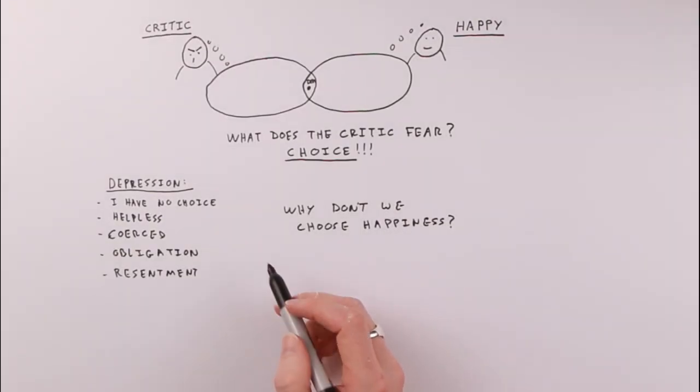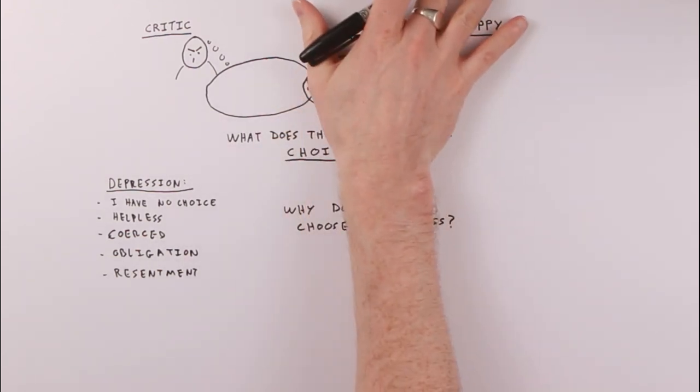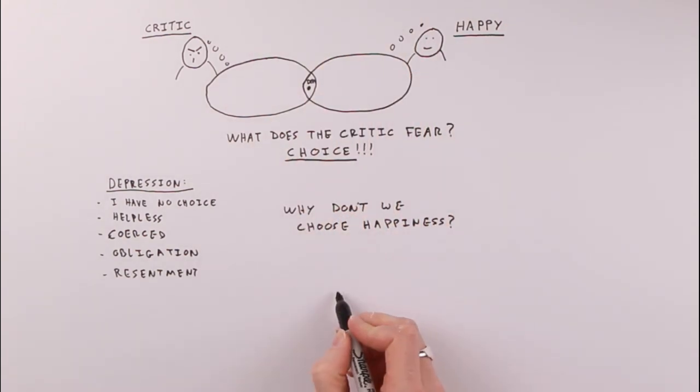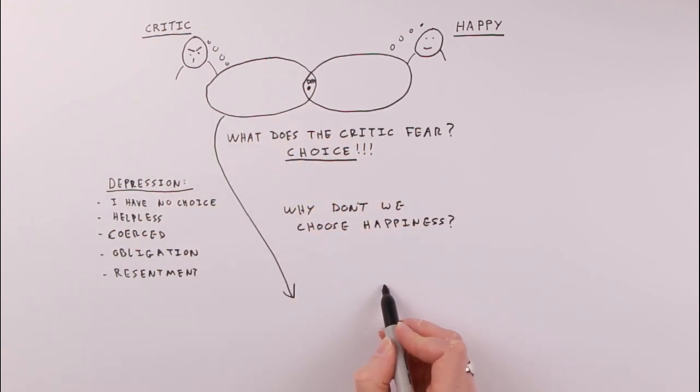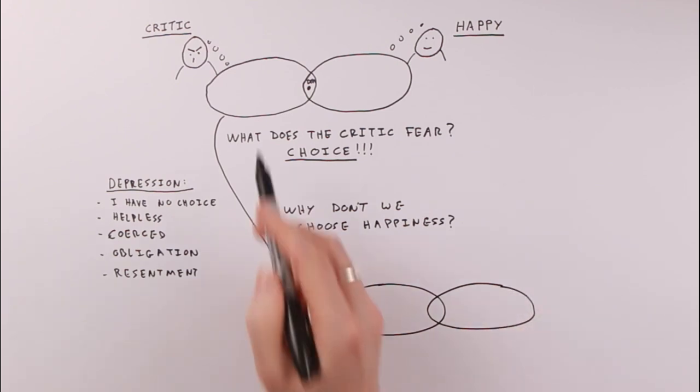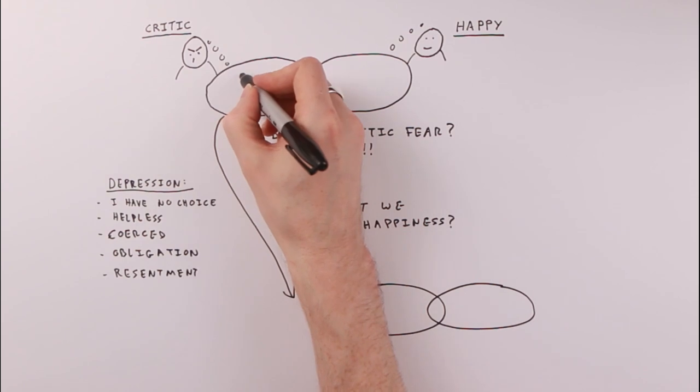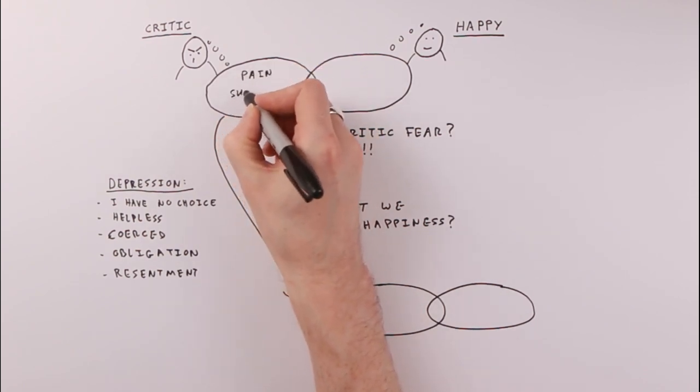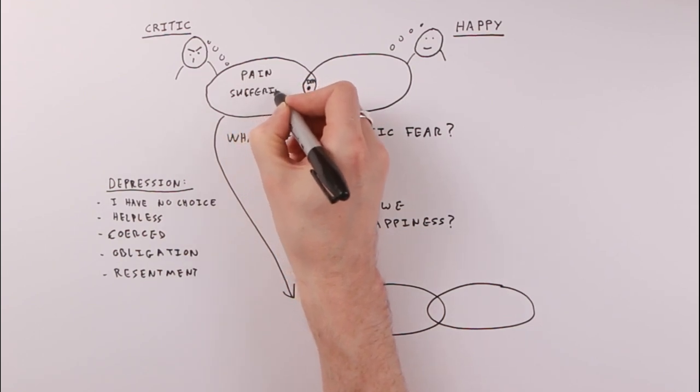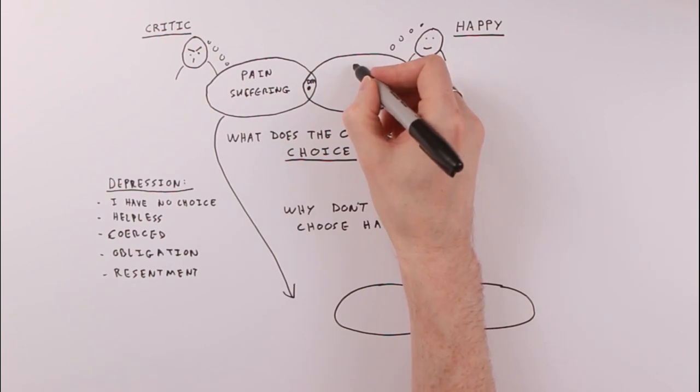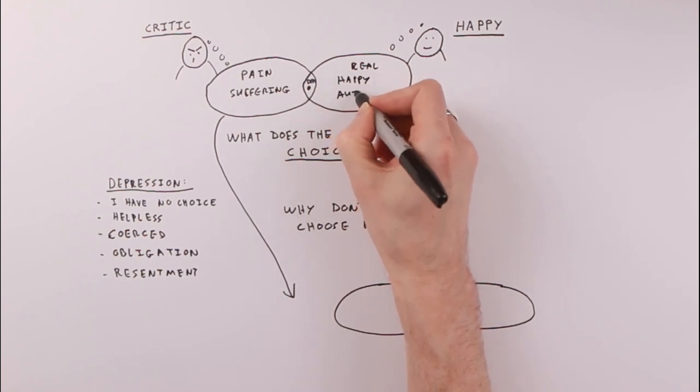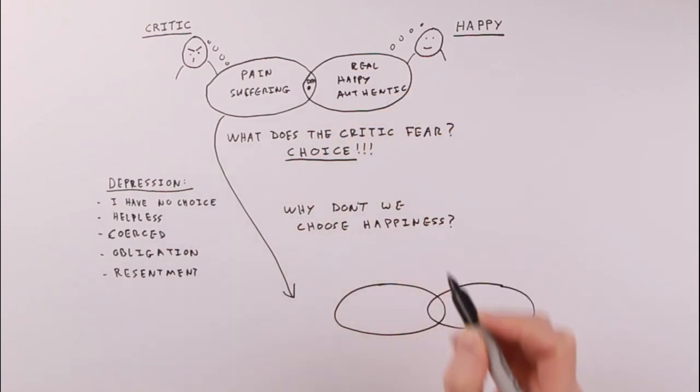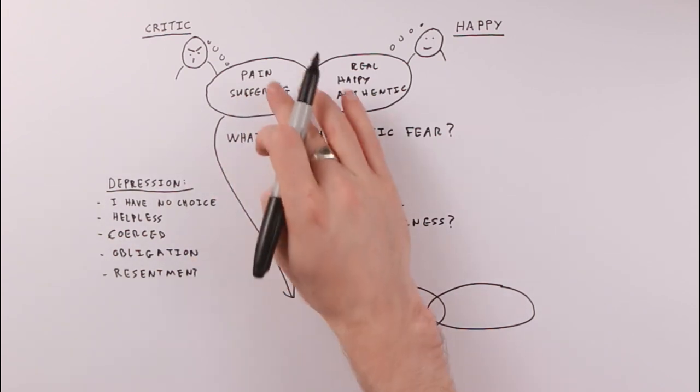When we come down here, we still have our critic, but the critic convinces us that happiness has disappeared, and it brings us down to a new place. And I want you to realize that where we're going here is almost like a game that the critic has managed to pull off, an illusion. When you're in this mindset within the critic, it's going to be a lot of pain. There's going to be a lot of suffering. Here, of course, we feel real, we feel happy, authentic. Now, that's nowhere to be seen. How does it manage to make you stay in this mindset?